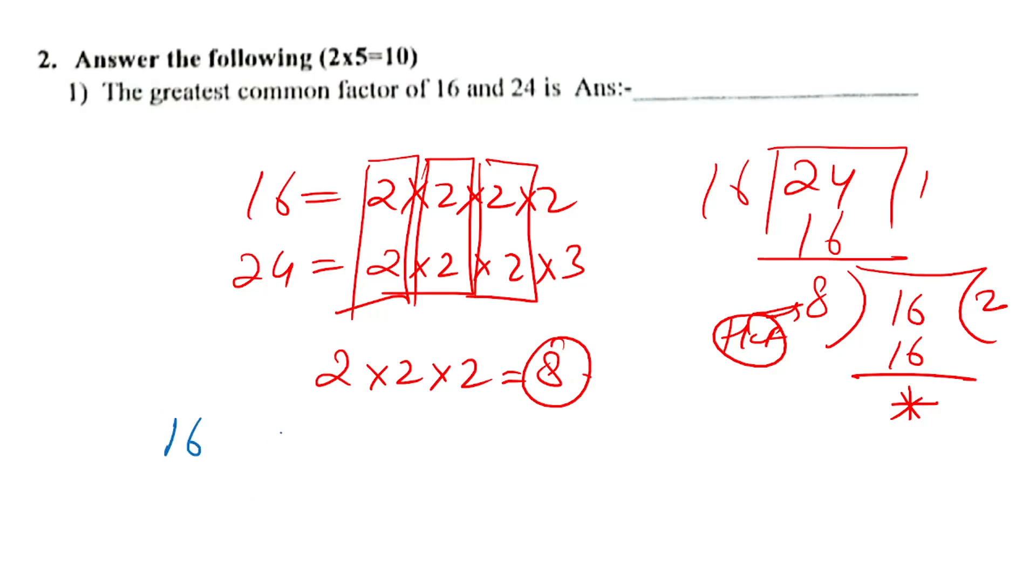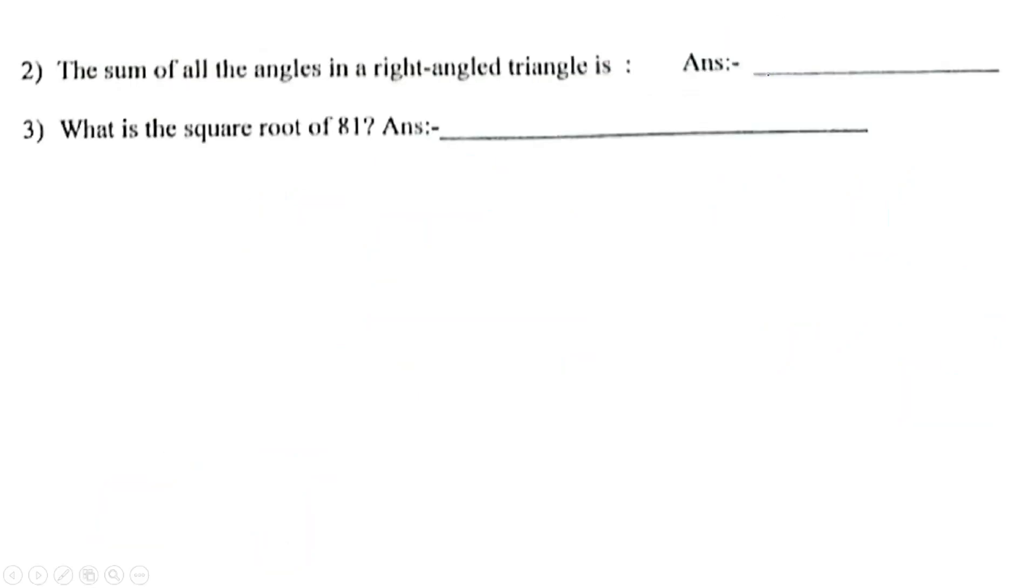Otherwise, using prime factors: 16 is 2 to the power 4, and 24 is 2 cubed times 3. The highest common factor is 2 times 2 times 2 equals 8. Or you can see 16 is 8 times 2, and 24 is 8 times 3, so the common number 8 is the HCF.